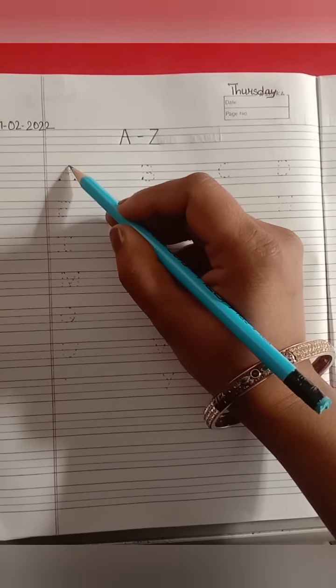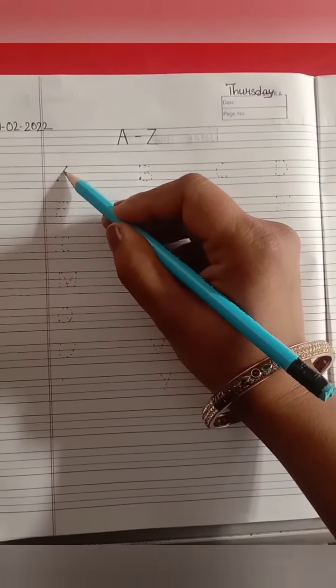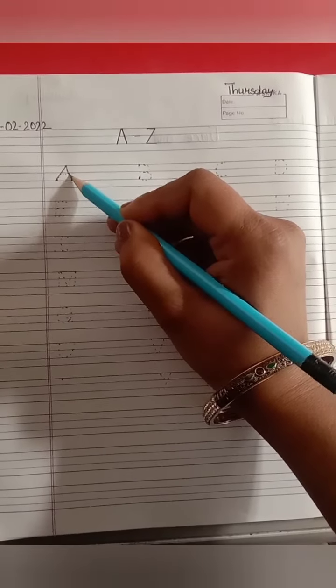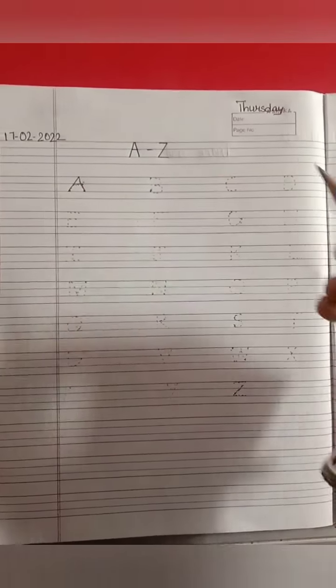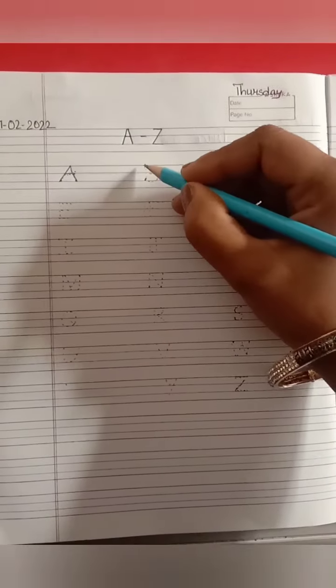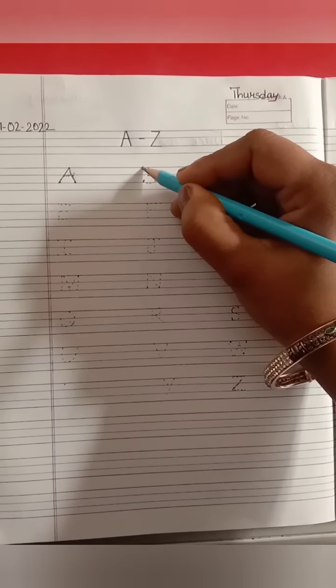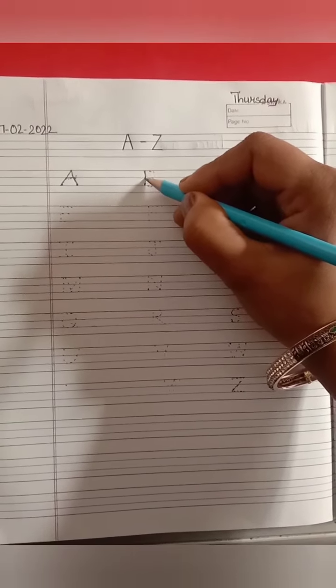First letter, letter A. How do we make letter A? Slanting line, slanting line, sleeping line. Letter A. Look, here is dotted letter. We have to trace karna hai.